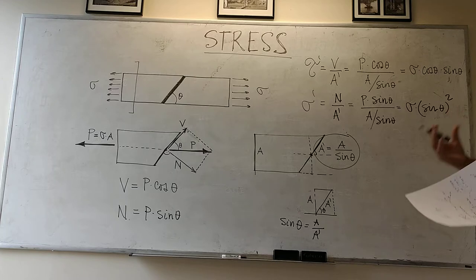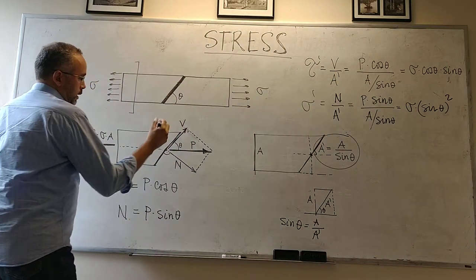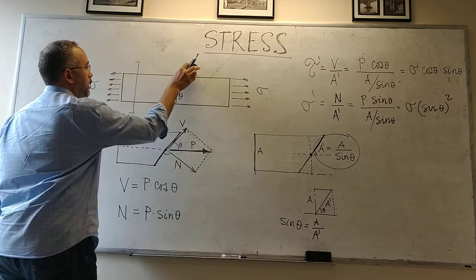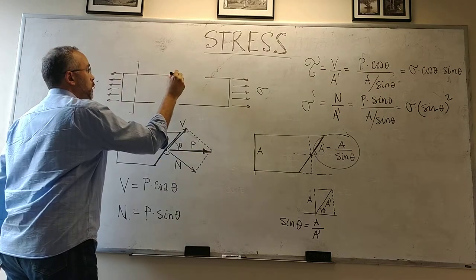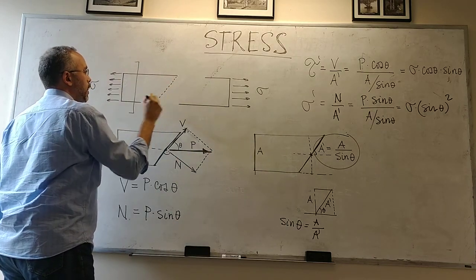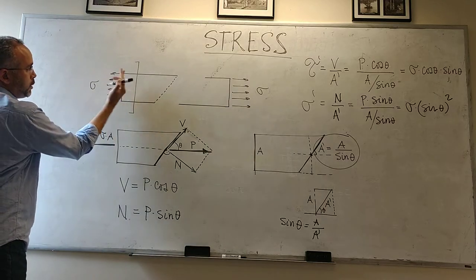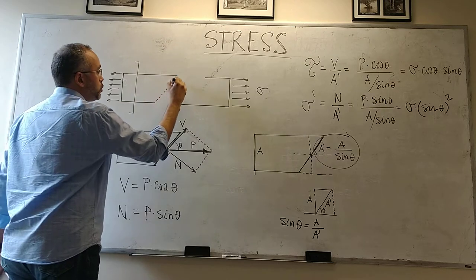The basic result is that on this surface here, we have two stresses now. So we have one stress pulling this way perpendicular, but once we incline the surface, two stresses appear.